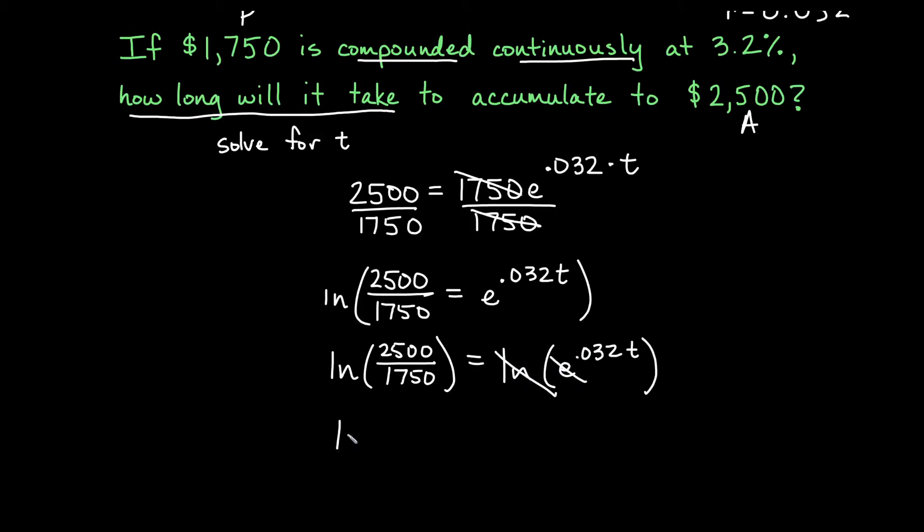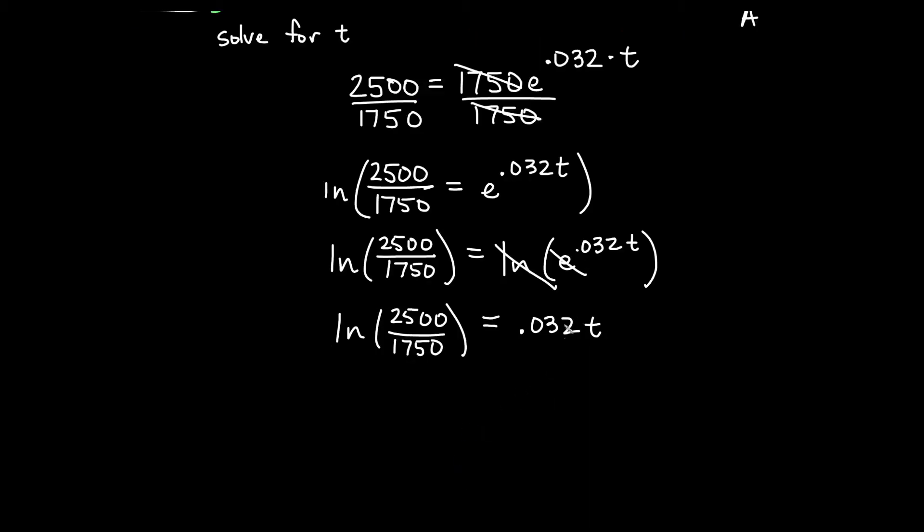So we actually get that the natural log of 2500 over 1750 is equal to just 0.032 times t. And then how do we solve for t? Well, we have 0.032 times t. So to get rid of times 0.032, we just simply need to divide by 0.032. So we'll divide both sides by 0.032.